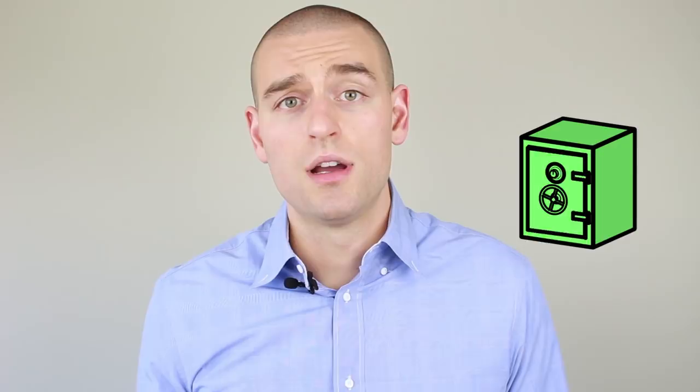In a taxable account, foreign taxes withheld are reported on your T3 or T5 and can generally be used to offset your Canadian taxes. In that sense, while foreign taxes are paid, they are recoverable. In a registered account, like your RRSP or TFSA, there are no T-slips produced, so the foreign tax that you pay cannot be used to offset your Canadian taxes. This makes foreign withholding taxes paid in your registered accounts unrecoverable.